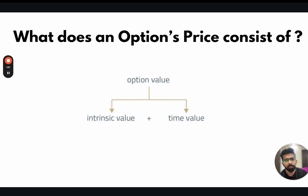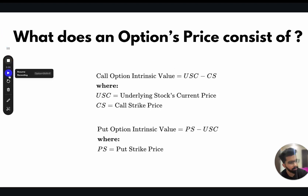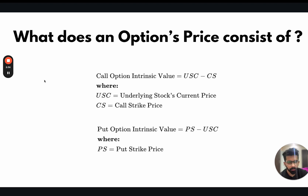So let's start. First, let us understand what an option's price consists of. Any option value consists of the intrinsic value and the time value. The intrinsic value of a call option is the underlying stock's current price minus the call strike price, and for a put option it is the put strike price minus the underlying stock's current price. Basically, the intrinsic value is the value that an option would have if it were to expire right now. All out-of-the-money options have an intrinsic value of zero, while all in-the-money options are priced as per their intrinsic value.